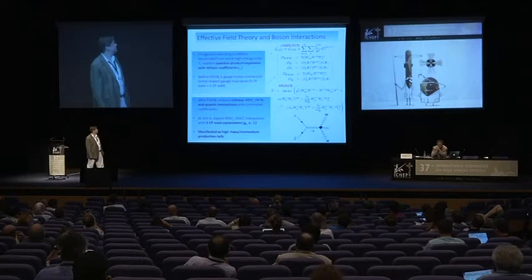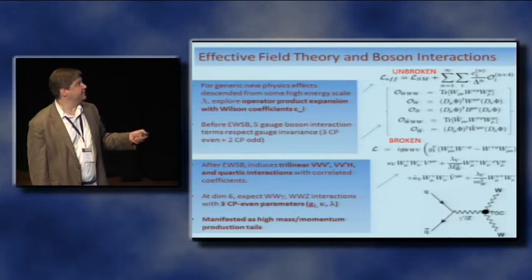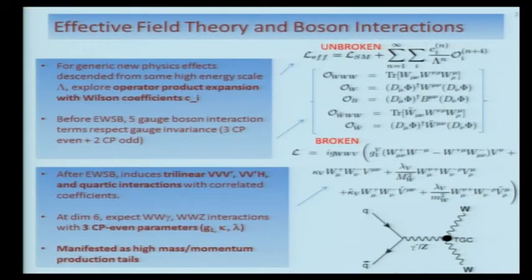Moving on to triple gauge boson couplings: the main paradigm is to use an effective field theory for generic new physics effects at some high-energy scale lambda. We construct an operator product expansion, retain dimension-six terms, and append them with Wilson coefficients which we attempt to measure. Before electroweak symmetry breaking, there are five such gauge-invariant operators available — three CP-even and two CP-odd. After symmetry breaking, you get an effective Lagrangian with triple gauge boson couplings, Higgs-VV couplings, and quartic interactions, including WWgamma, WWZ, and three CP-even coefficients. Any anomalous behavior due to these operators manifests as long tails in the kinematics of diboson production.